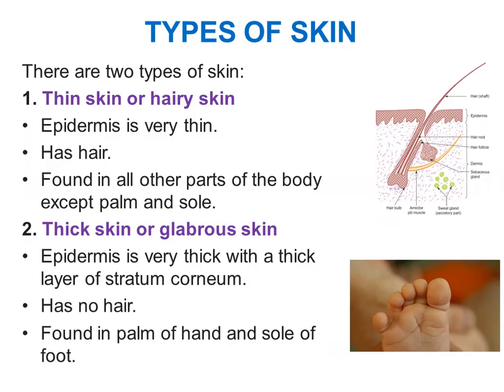There are two main types of skin: thin skin and thick skin. Thin skin, also called hairy skin, has a thin epidermis. If you see this picture, this part is epidermis and this is the dermis — in thin skin the epidermis is very thin. It also has hair. Examples of thin skin are all parts of the body except the palm and sole.